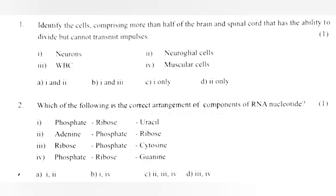Question 1: Identify the cells comprising more than half of the brain and spinal cord that have the ability to divide but cannot transmit impulses.